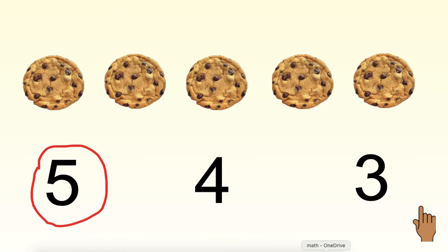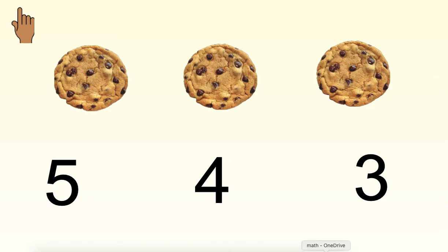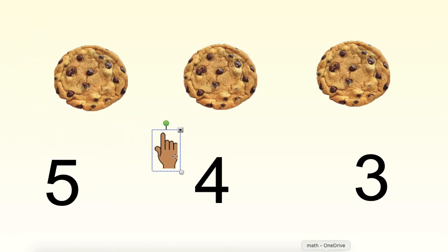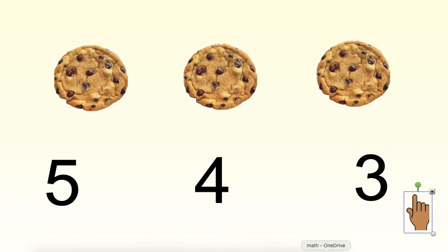We have one more. Again, it's your turn. Point to each cookie as you count them. Then we'll look at our answer choices. Now look at each answer choice before you choose. Point to the number that shows how many cookies there are. Let's check. One, two, three. There are three cookies on this page. Nice job.